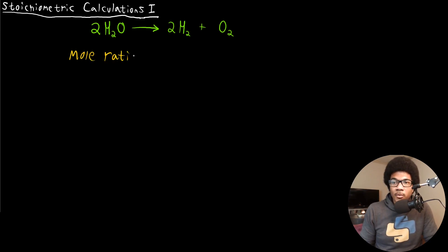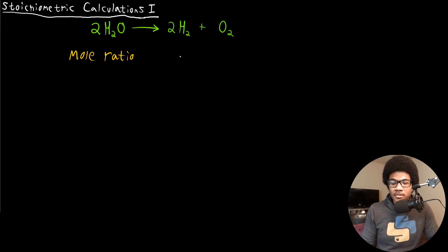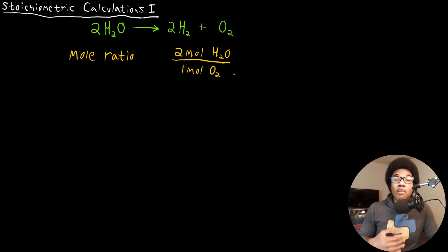The mole ratio is simply the ratio of the number of moles of one compound to another in a chemical equation. Right here we have the decomposition of water into hydrogen and oxygen — H2 and O2. We notice that there is a two-to-one ratio between the water molecules and the produced oxygen. So for every two moles of water, you produce one mole of oxygen. The mole ratio would look like this: for every two moles of H2O, you will produce one mole of O2.